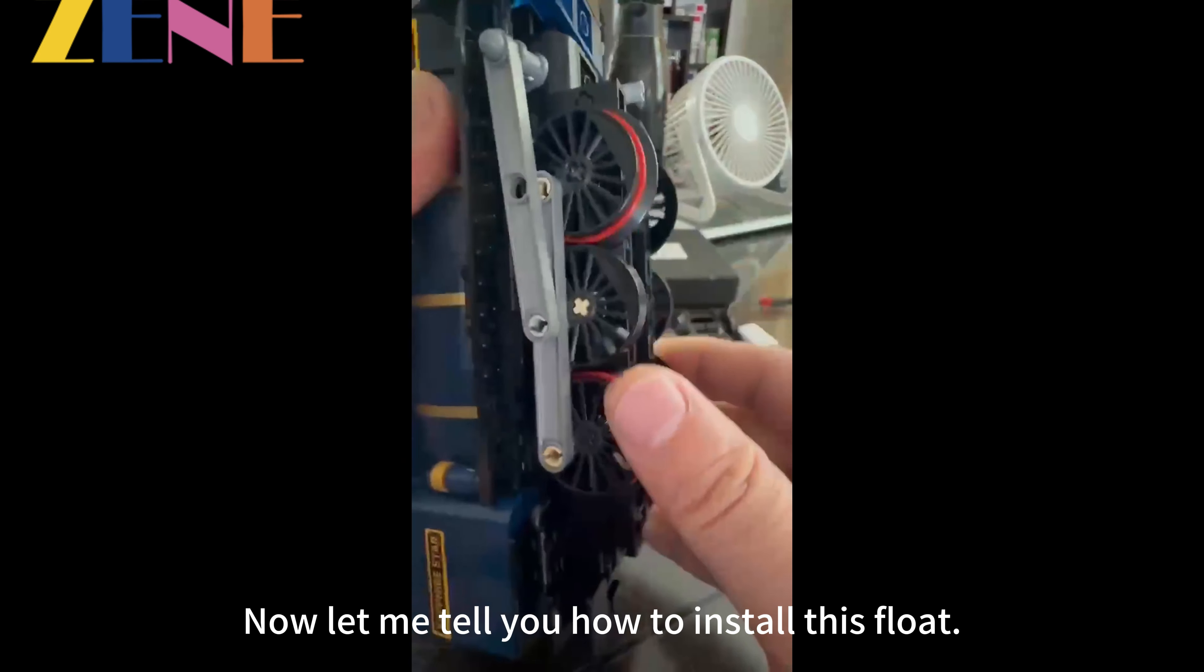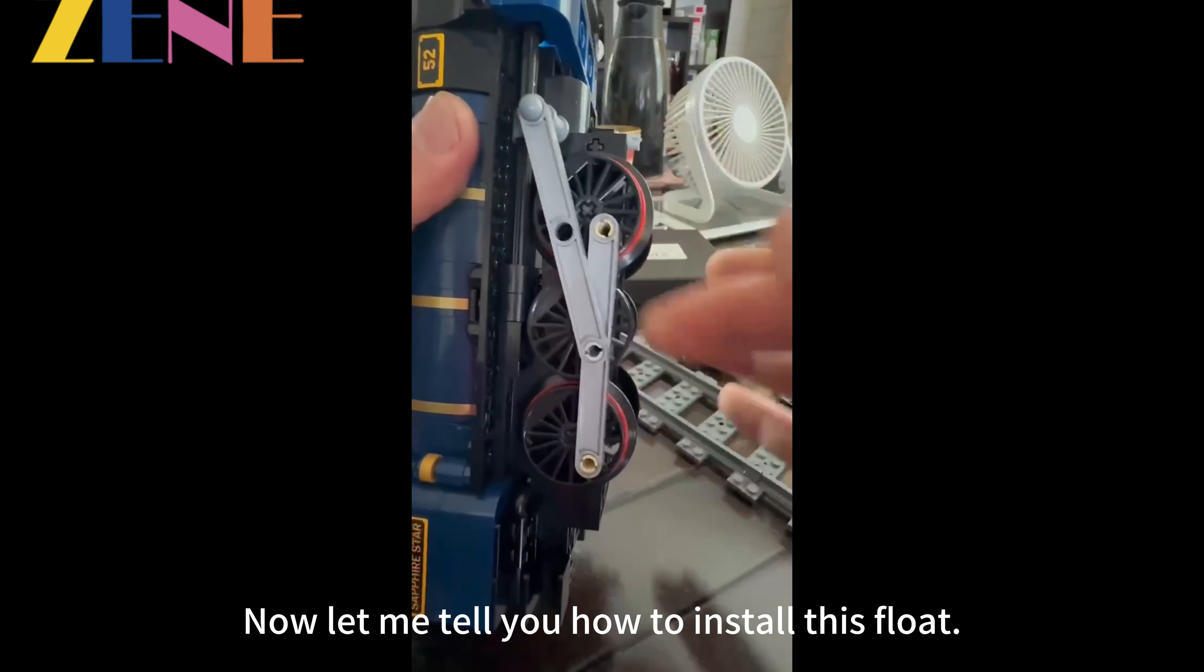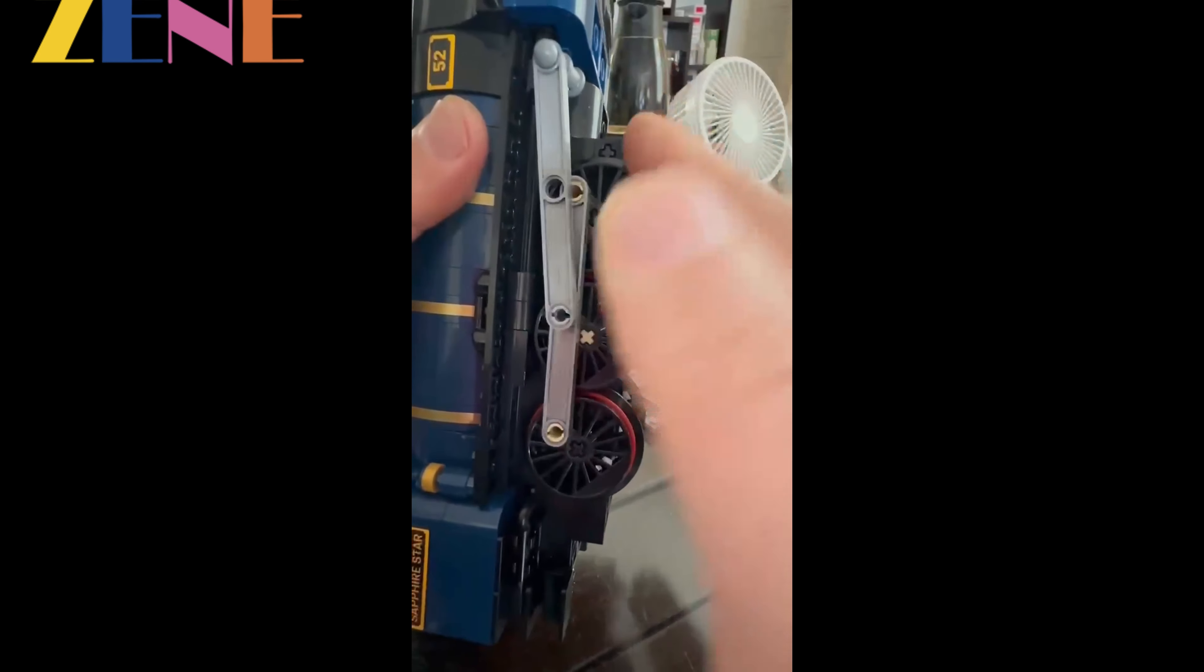Now let me tell you how to install the float. The train is now on my right side. According to the instructions, when the three dots on the right are all at 3 o'clock.